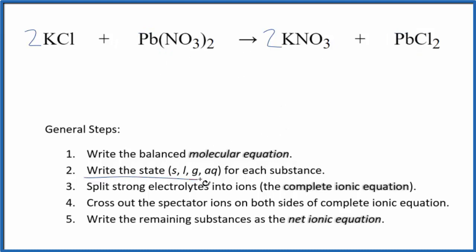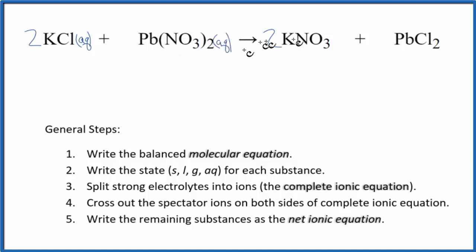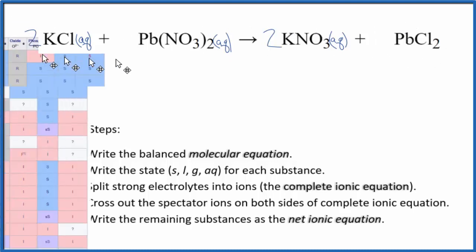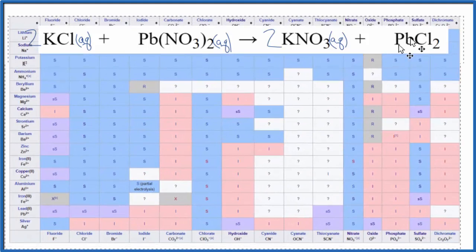Now we can write the states for each substance. Chlorides are very soluble with a few exceptions. Nitrate is also very soluble — we have another nitrate, so that's soluble too. It's going to dissociate into its ions. And then when you see lead compounds, you really need to check and see whether they're soluble in water or not. If you know your solubility rules, you'll know lead 2 chloride is not soluble in water.